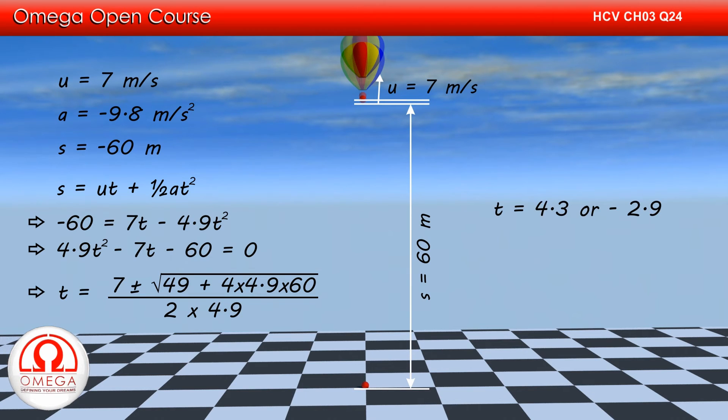Simplifying, we get t equals 4.3 or minus 2.9. Since time cannot be negative, the negative root is discarded. Thus, the time the ball takes to reach the ground is 4.3 seconds. This is our answer.